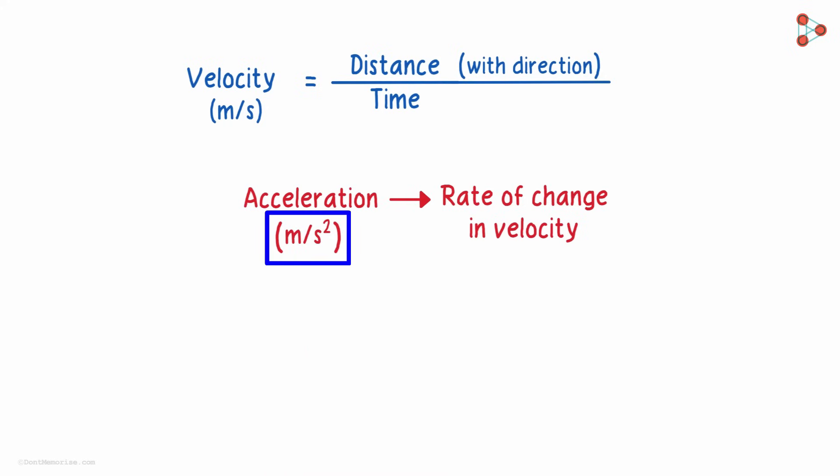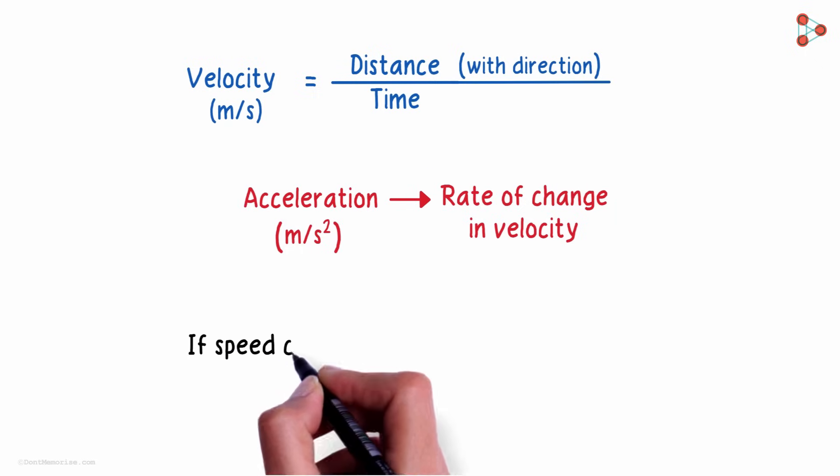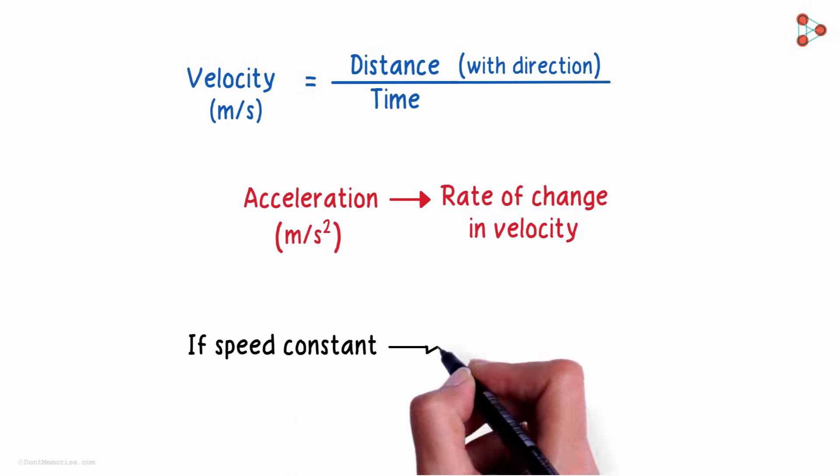It is the measure of the change in velocity. So an object moving in a straight line at a constant speed has zero acceleration.